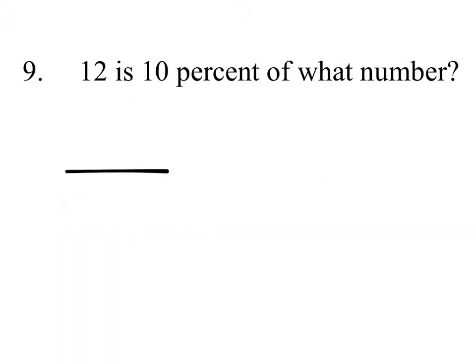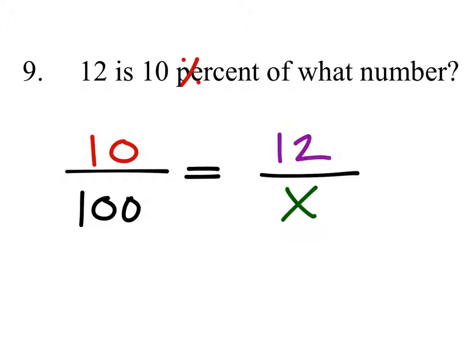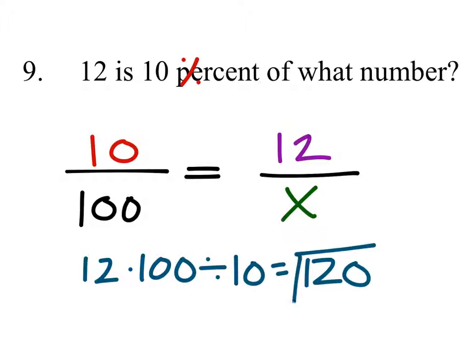On this, using the percent proportion, this one did not give us the percent. Actually, it gave us the percent, 10%. So the percent goes above the 100, and 12 is the 10%, so that's the 12, of some number. Using fish method, 12 times 100 divided by 10 is 120.